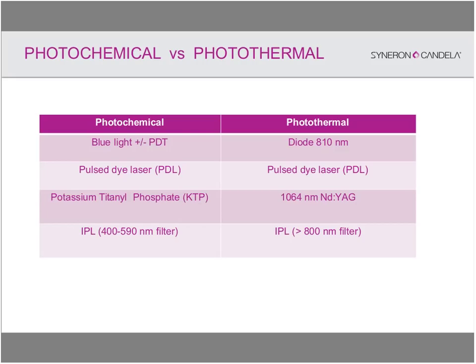How do lasers and light work in acne vulgaris? There are two main mechanisms: a photochemical and a photothermal effect. The photochemical effect means the light — whether from a blue light source or a pulsed dye laser such as the yellow-light laser I'll be discussing — has a chemical effect on the skin, killing bacteria. The photothermal effect is when the laser generates heat, leading to coagulation of the small vessels that feed the sebaceous glands, reducing their activity and acting against the inflammatory response. Overactivity of the sebaceous gland also contributes to active acne.